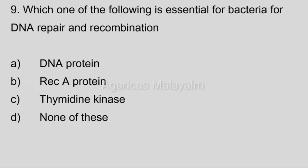Ninth question: Which one of the following is essential for bacteria for DNA repair and recombination? Answer options — Option A: DNA protein. Option B: RecA protein. Option C: Thymidine kinase. Option D: None of these. Correct answer: Option B, RecA protein.